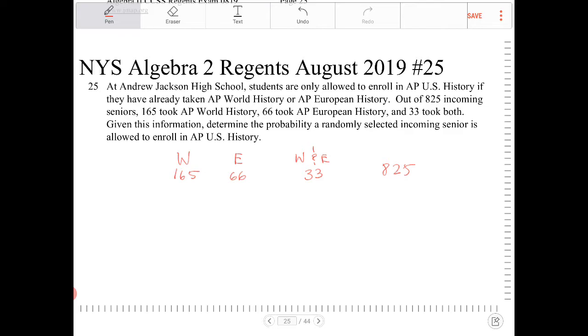Given this information, determine the probability a randomly selected incoming senior is allowed to enroll in AP U.S. History. So they are allowed to enroll. So probability of U is equivalent to probability of W or E. And why is that? Well,